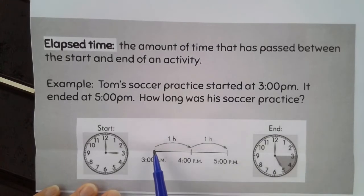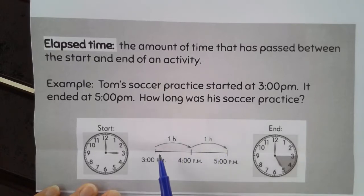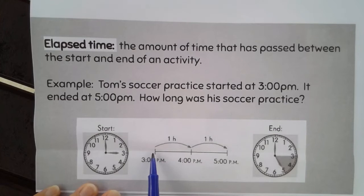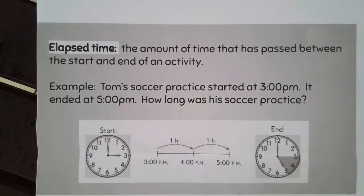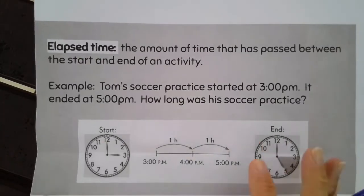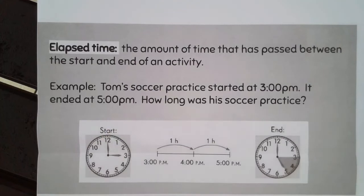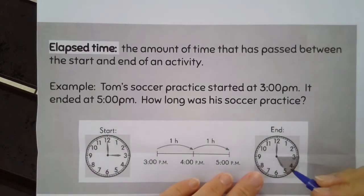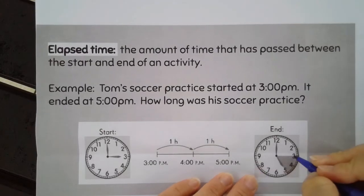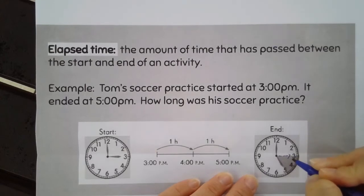And you can hop in one-hour increments until you get all the way to 5 to see how many hours it was. So, from 3 o'clock, if I go one hour past 3 o'clock, I land on 4 o'clock. One hour past 4 o'clock would be 5 o'clock. So, I can go back and see that there are two hours between 3 o'clock and 5 o'clock. It went from 3 to 4 and 4 to 5 — it went two hours past.